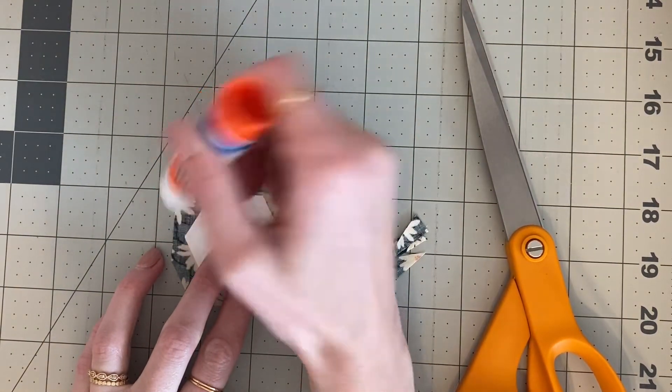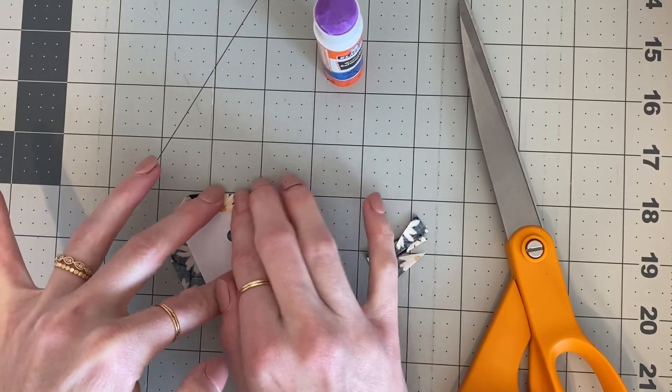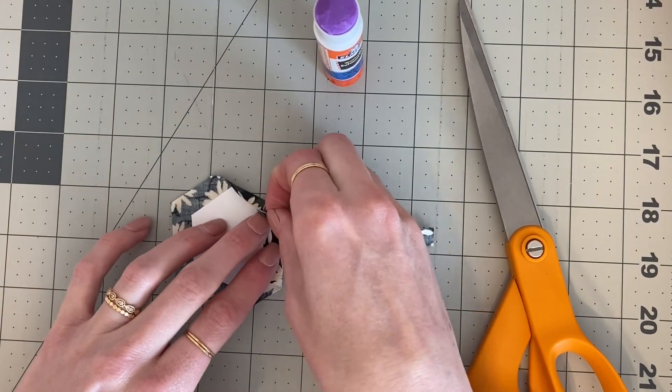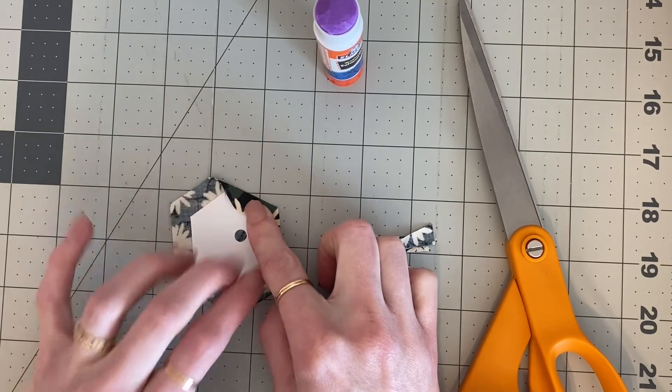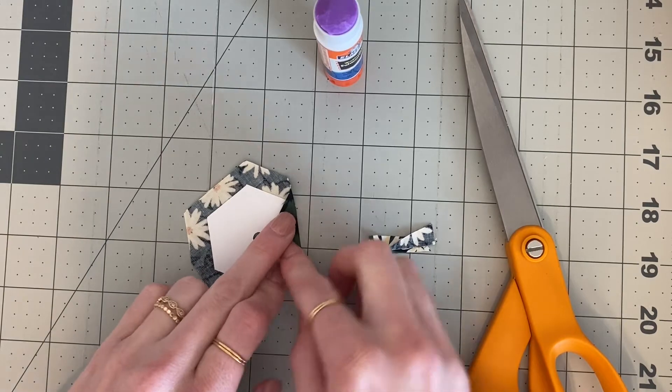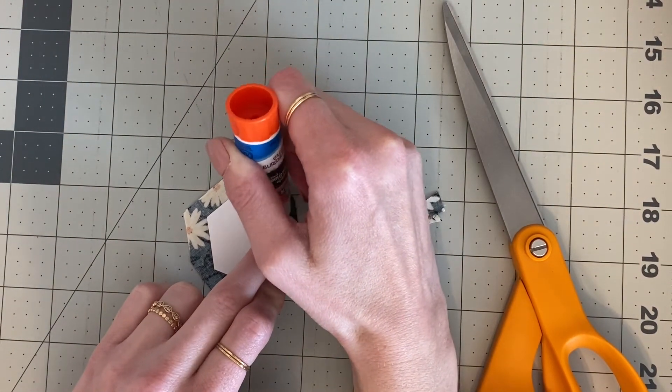Then I'm going to fold this piece over, press it on. I like to turn it and do the same with this side. Make sure you pull your fabric tight but not too tight that it's going to warp.